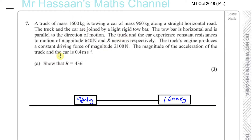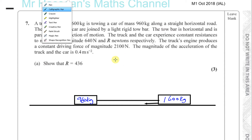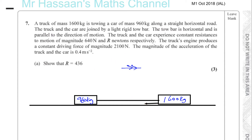The tow bar is horizontal and parallel to the direction of motion. The truck and the car experience constant resistance to motion of 640 newtons and R newtons respectively. So the truck has a resistance of 640 newtons and the car has R newtons resistance to motion.